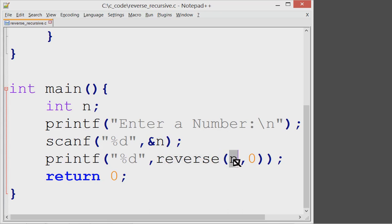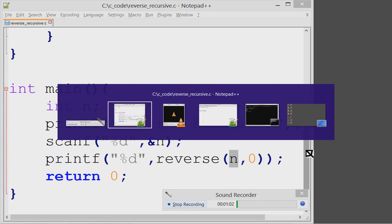This reverse function has two arguments. First is the input by the user and second value is 0. The second value has to be 0.